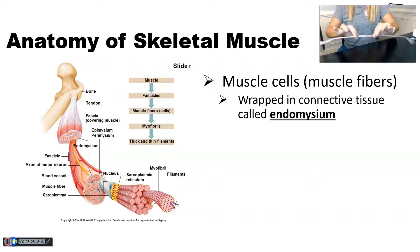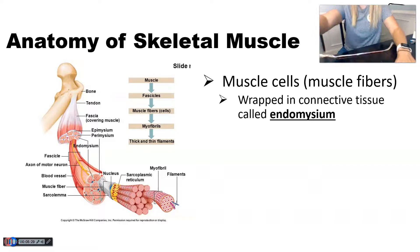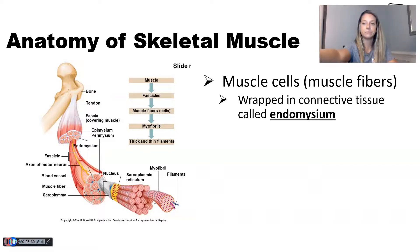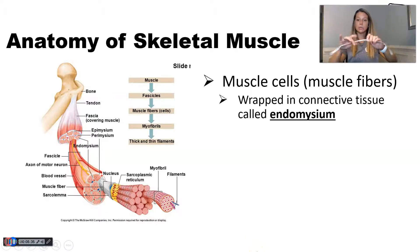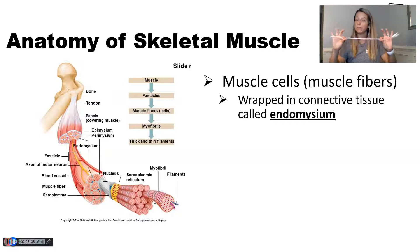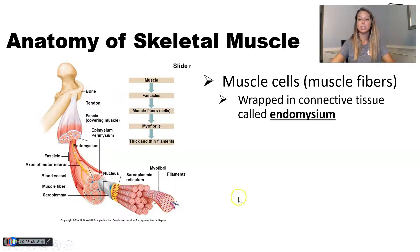So a single muscle cell wrapped in connective tissue — that layer of connective tissue is called endomysium. That makes sense because the word part 'endo' means inner or innermost, and this is going to be the innermost layer of connective tissue in our muscle.